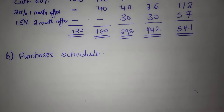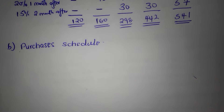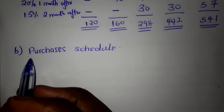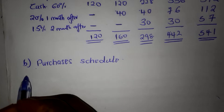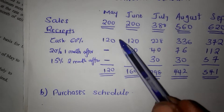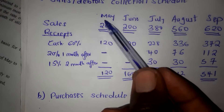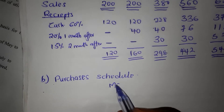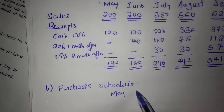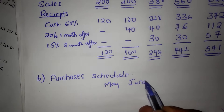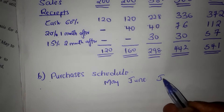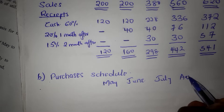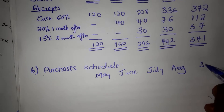For the purchase schedule, we are going to calculate in this manner. The data is still flowing, but for clarity, we are looking at the months: June, July, August, and September.